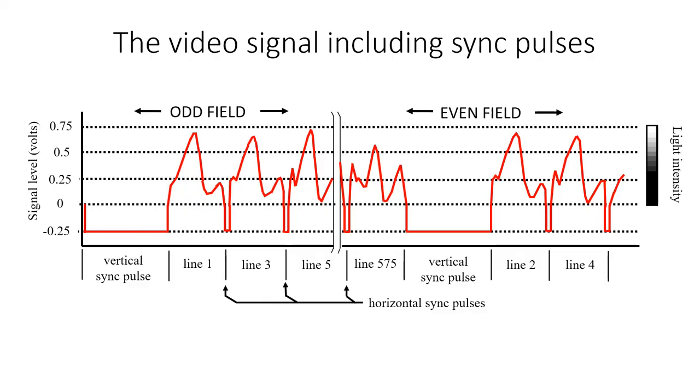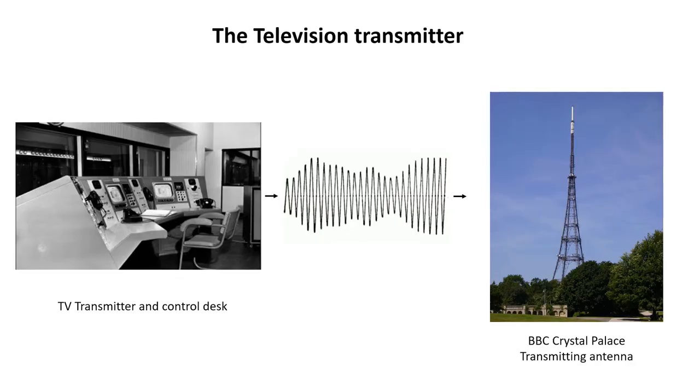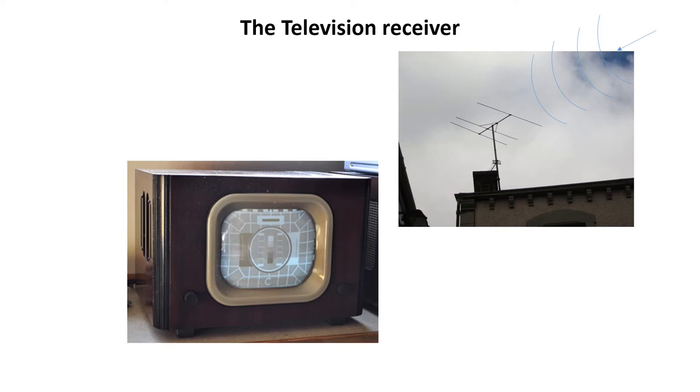The television signal is then used to modulate a carrier wave, as described in the How Radio Works video, and is transmitted from the transmitting antenna along with the sound signal. There now follows a description of how the TV receiver recreates the image. The video and sound signal from the transmitter is received by the TV's antenna, where the video signal is extracted to recreate the picture, and the sound signal is converted to sound.